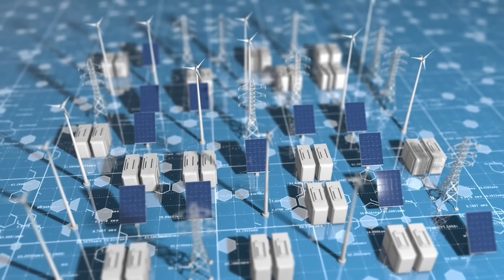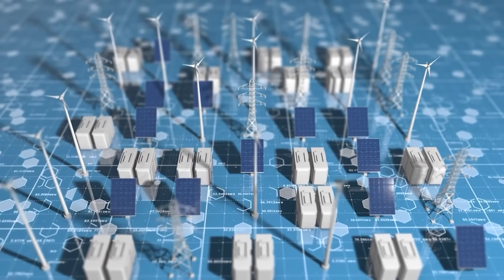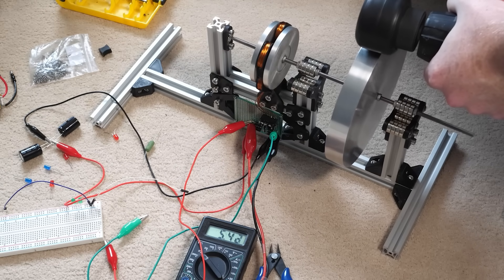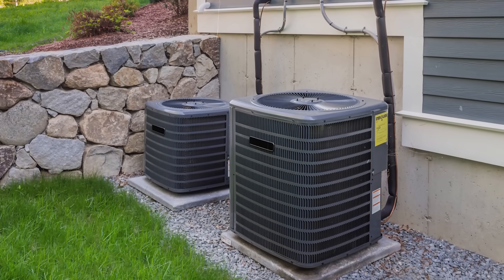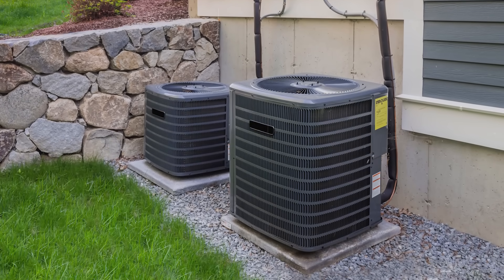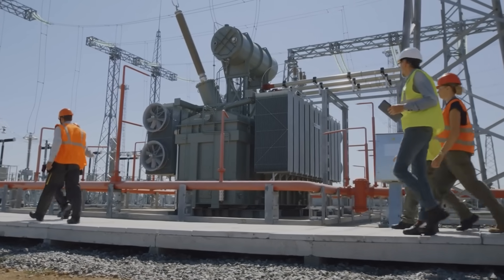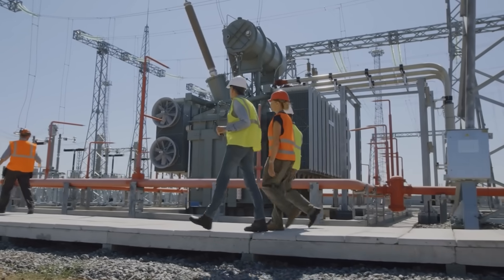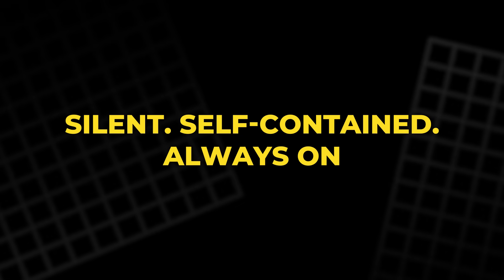Officially, Taurus builds microgrid energy systems. Unofficially, it might be building the first home-scale free energy generator. Their prototype, about the size of a household AC unit, claims to make every home its own power plant. The company calls it a mini power station: silent, self-contained, always on.